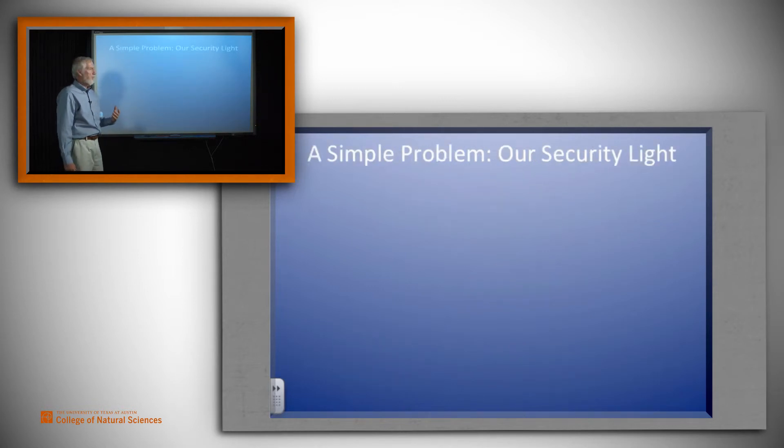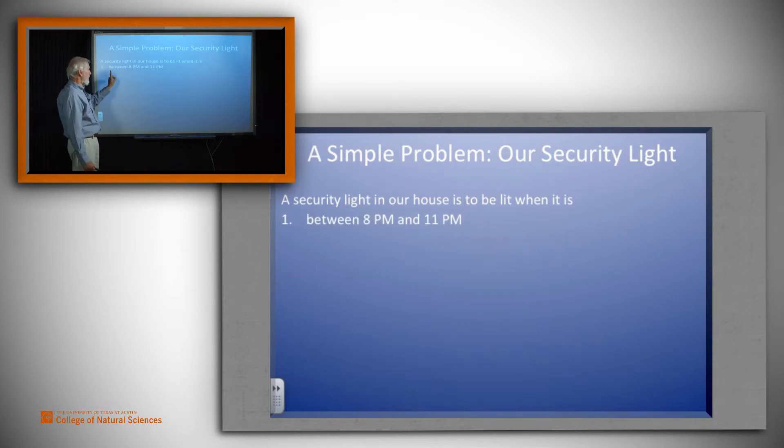Let's do a little example right now. We're going to imagine we've got a security light, and someone says they want the light to be on when it is between 8 p.m. and 11 p.m. or if there is a serious storm. So once again, light is to be lit exactly when it is between 8 p.m. and 11 p.m. or whenever there is a serious storm.